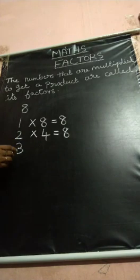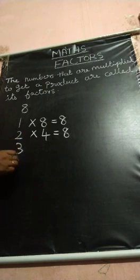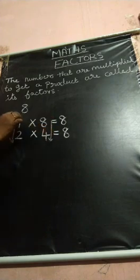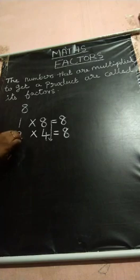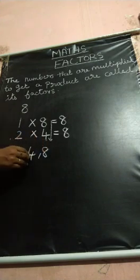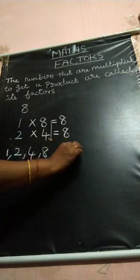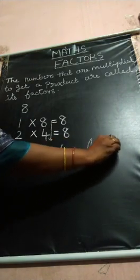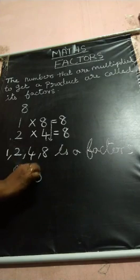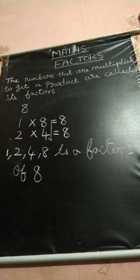3 tables — did 8 come? No. 3 table, no. Then again 4 — but 4 already came before. So you finish the factors. You start from 1: 1, 2, 4, 8. So 1, 2, 4, 8 are the factors of 8.